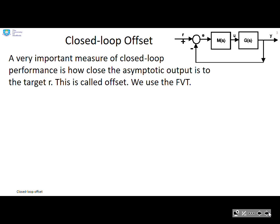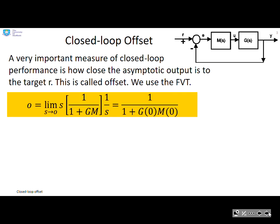So closed loop offset. A very important measure of closed loop performance is how close the asymptotic output is to the target. This is called offset.